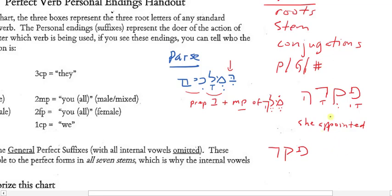There are seven stems. We are learning the first stem today. And the first stem is called the cal stem. Okay? So, that would be the second bit of information I would give.